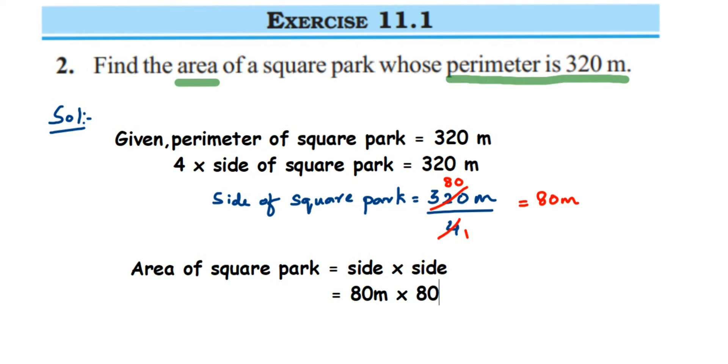When you multiply 80 and 80, 8 times 8 is 64. You can multiply the number and then put two zeros. So 8 times 8 is 64, then two zeros, giving us 6400.